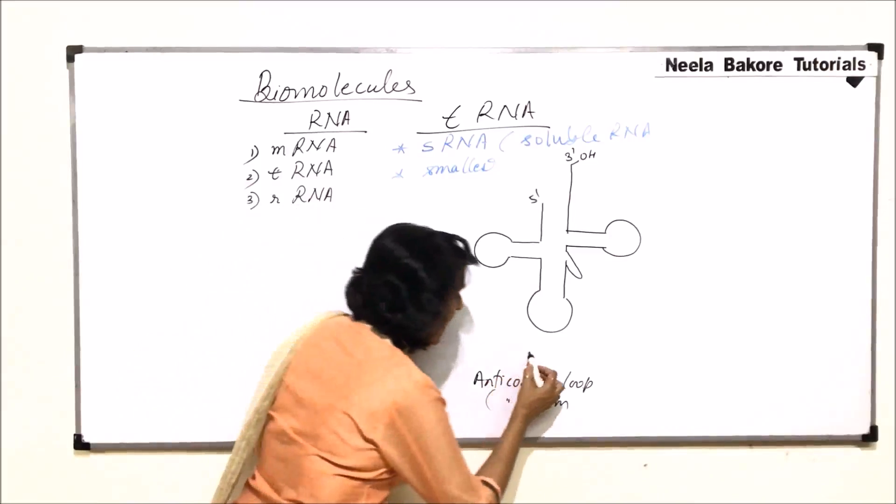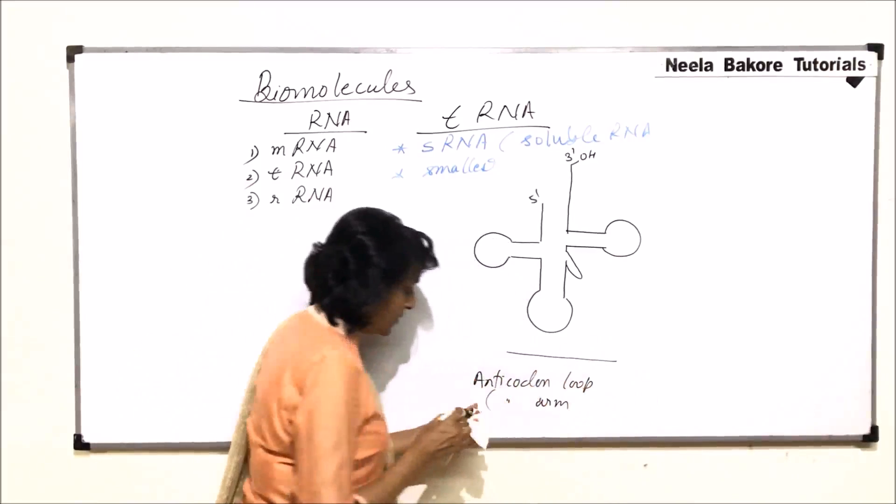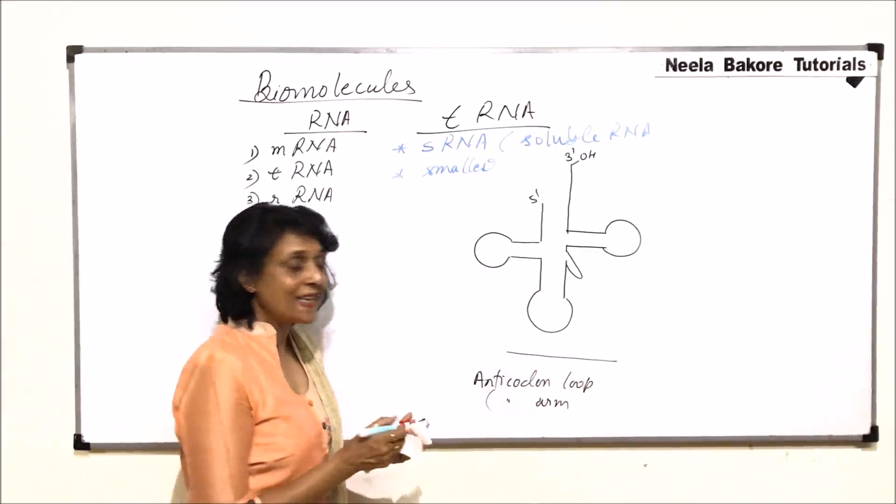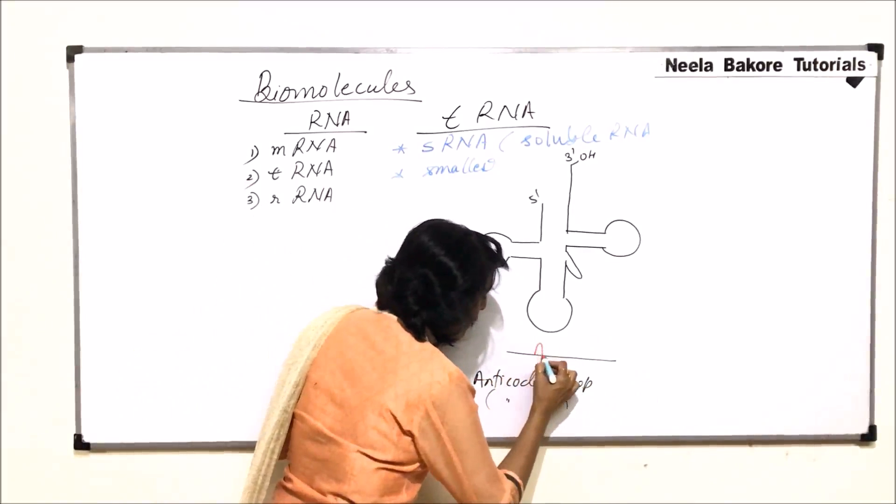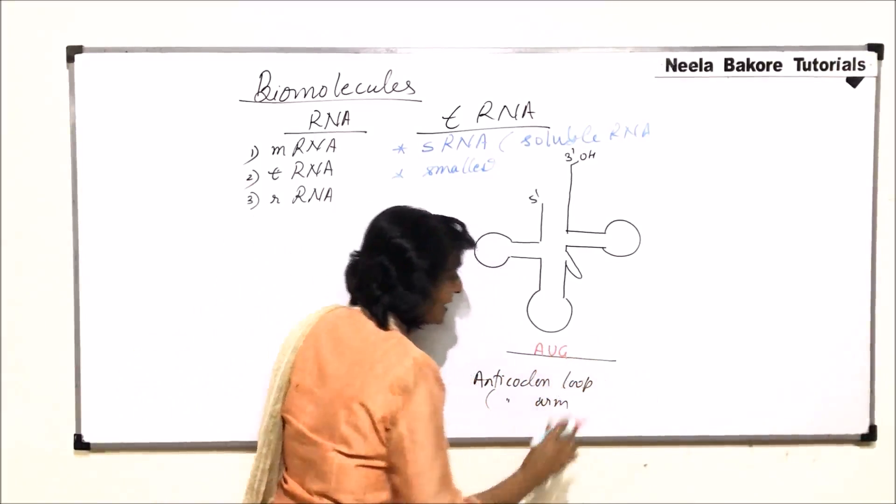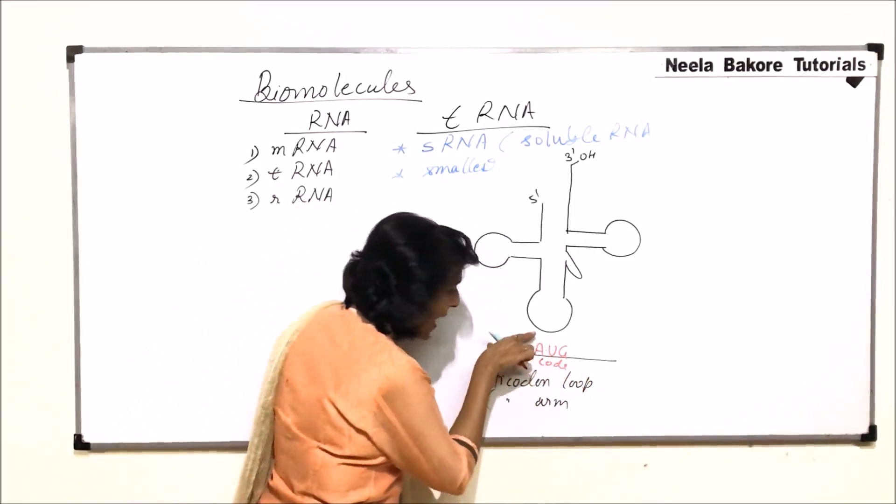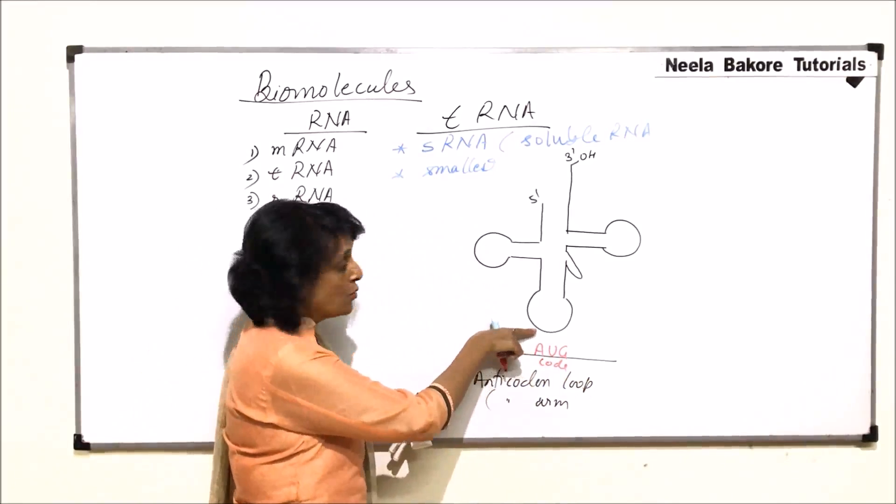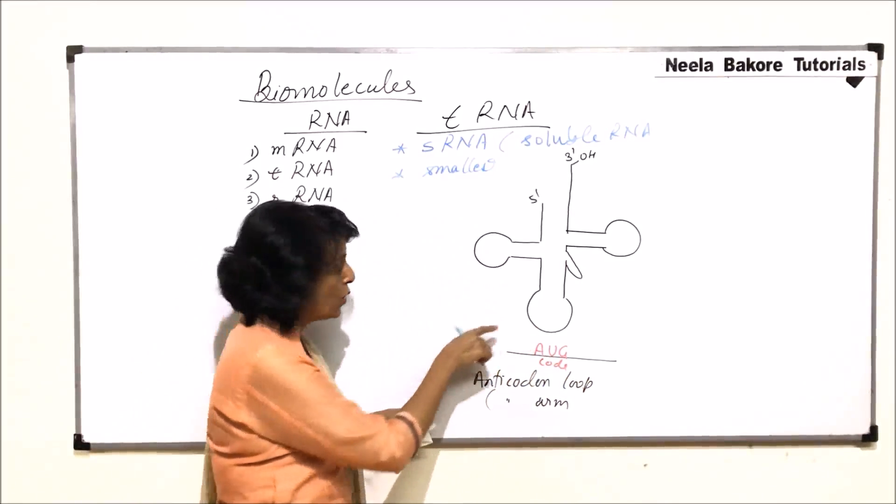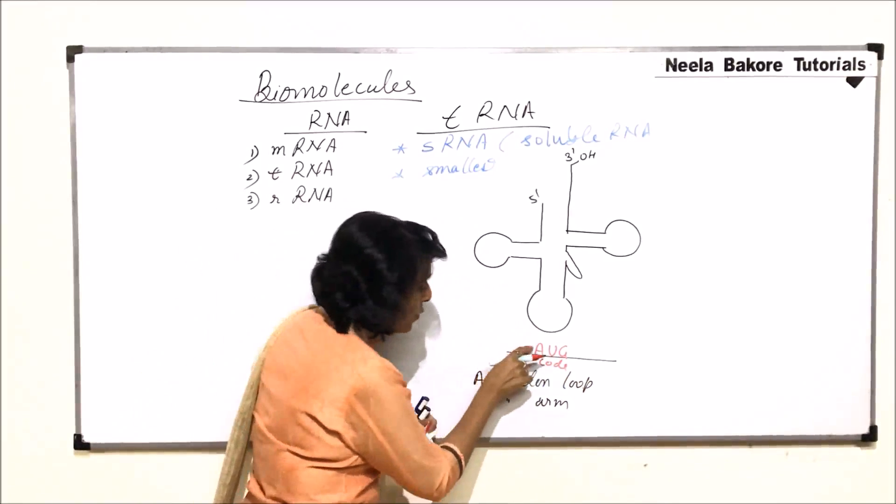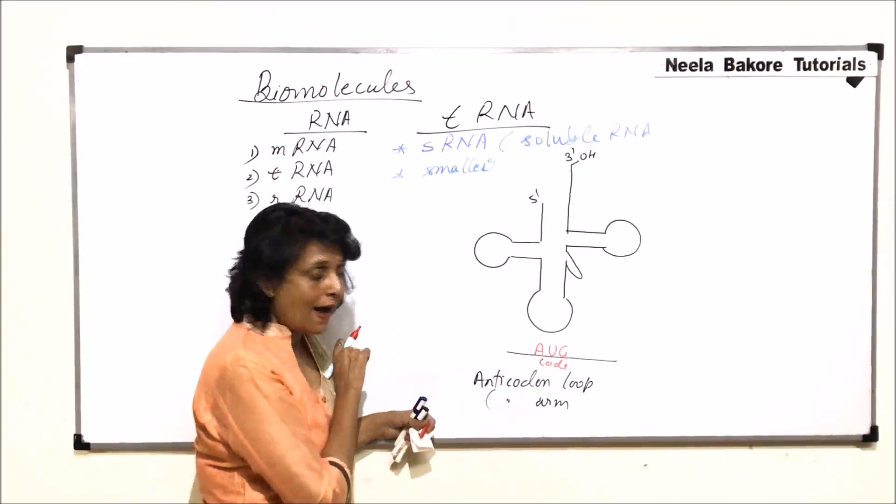Codes are present on mRNA. So suppose this strand which we have drawn is mRNA and the code here on mRNA is AUG. This becomes the code. So anticode which is going to help read this code is on this loop. So what would be the anticode on the arm here?